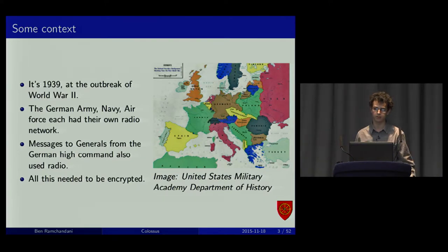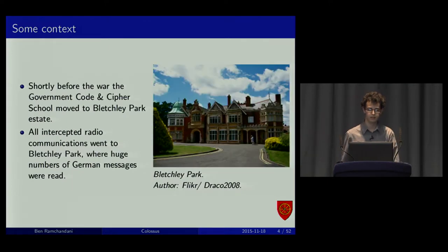The German High Command also had their own radio network. Often telegraph lines have been cut or destroyed during the war, so they needed to communicate with generals in the front. All of this had to be encrypted. It could be intercepted in Britain. All the intercepts from the so-called Y stations, they were taken to Bletchley Park, where the government code and cipher schools had moved shortly before the war, mostly to avoid bombing in London. Also, it was well-positioned. It was halfway between here and Oxford, on the west coast mainline into London.